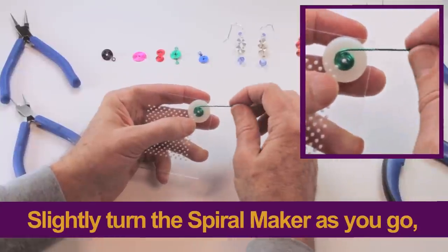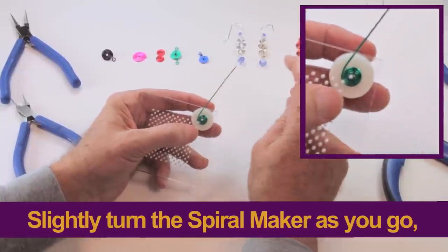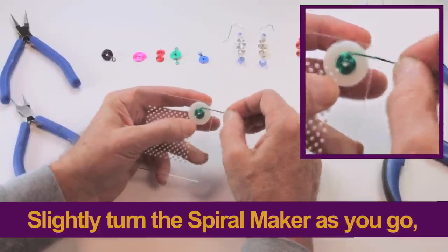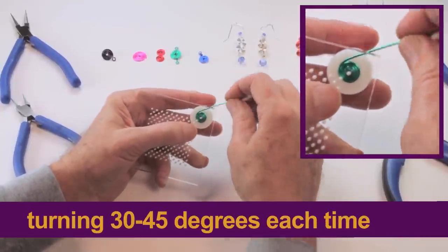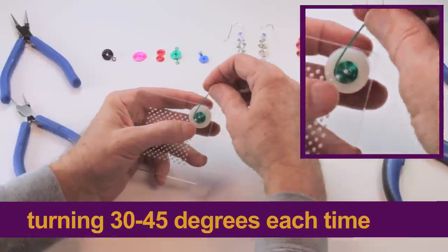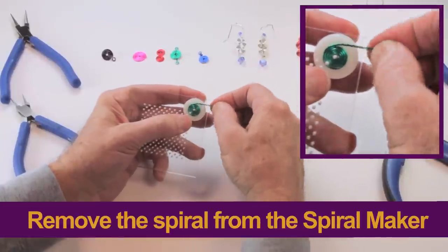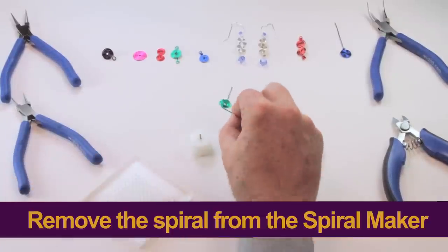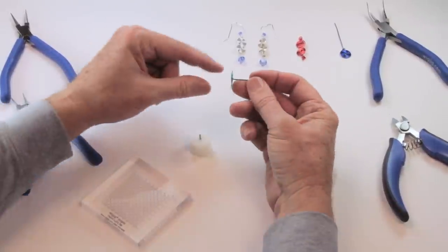So I move it a little bit, and then I relax the tension on the spiral maker, get it back, and then I move it about 30 or 45 degrees at a time. And then you're slightly turning the spiral maker as you... Every time I'm slightly turning the spiral maker as I go. And so the end result, you can see, is a spiral that looks like this. Beautiful.